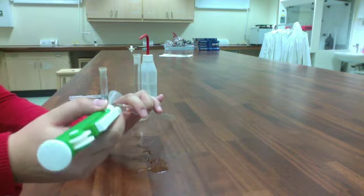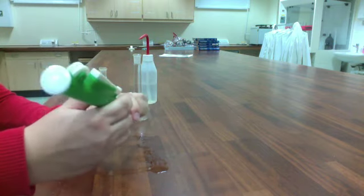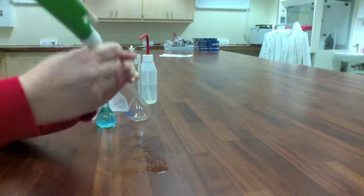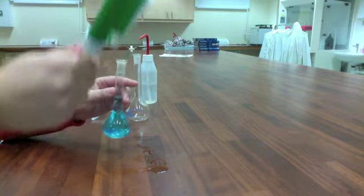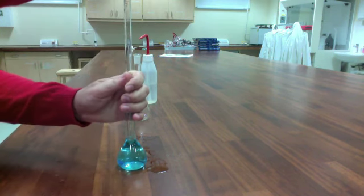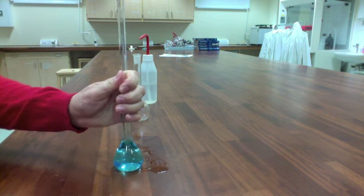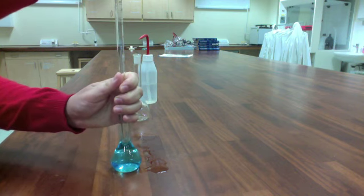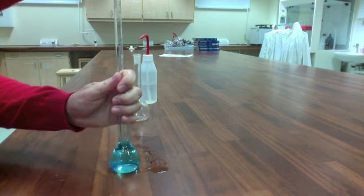We'll just put the pipette bulb on the top. You don't need to jam it on, it just kind of slides on. Then put the pipette into the volumetric flask. Make sure that the point of the pipette is not touching the bottom, or else it will be impossible to draw up any liquid.